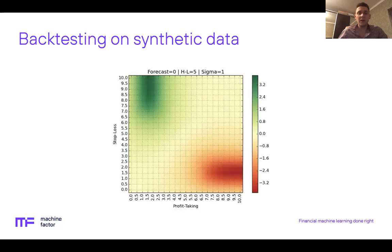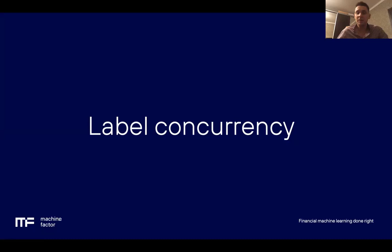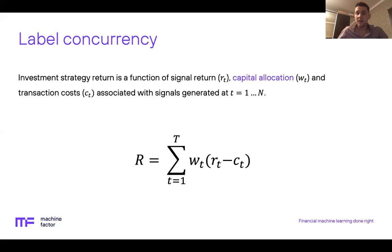Here we can see a heat map of trading rules for triple barrier labeling generated for a mean-reverting Ornstein-Uhlenbeck process. Stop loss and fixed profit levels are set as number of standard deviations, and values on the heat map are corresponding Sharpe ratios. When detecting optimal training rules, we need to take into account not only the returns generated from labels, but also capital allocations, restrictions, and transaction costs for each signal. On a high level, our strategy return is the sum of capital allocations to each individual signal multiplied by the signal return minus associated costs, including transaction, execution, and slippage costs.